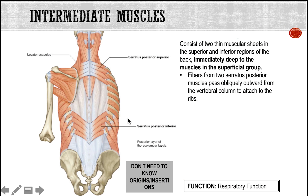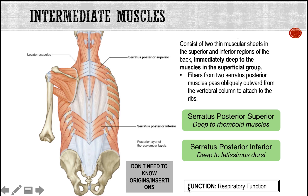Moving to the intermediate muscles: these consist of two muscle sheets located on the superior and inferior regions of the back. As the name implies, they are deep to the superficial muscles, and there are only two — serratus posterior superior and inferior — arranged in a serrated, blade-like fanning arrangement. Their function is purely respiratory: when breathing in and out, these muscle groups help in the expansion and contraction of the rib cage along with the intercostal muscles.